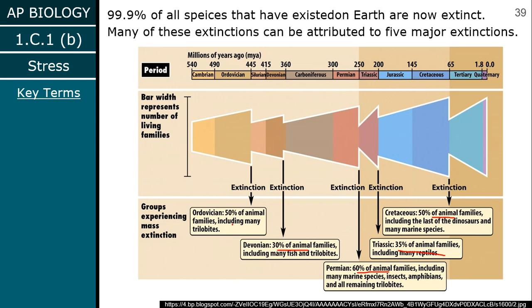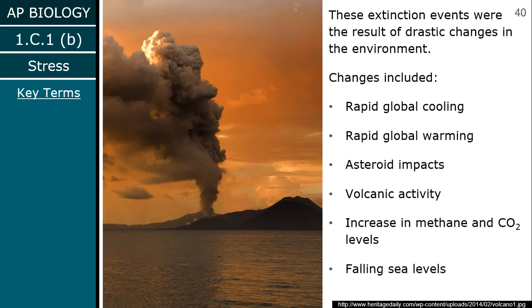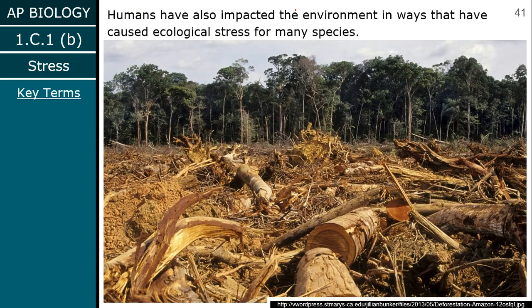Huge numbers of organisms die when the environment changes really rapidly — like when an asteroid hits the Earth. Things change quickly, and extinction events are generally brought on by some drastic change: volcanic activity, sea level change, global warming or cooling, whether human-caused or not. There have been rapid global cooling and warming in the past that were not human-caused — there were multiple ice ages. It's important to distinguish between what is human-caused and what isn't.